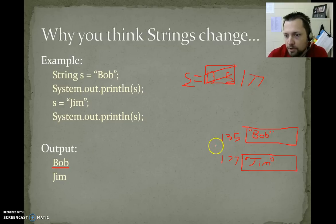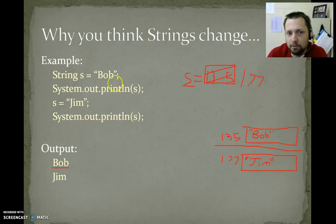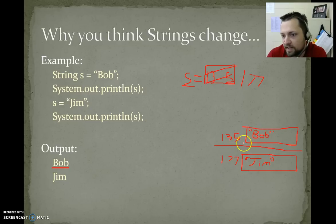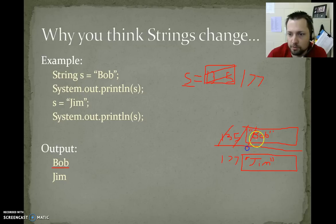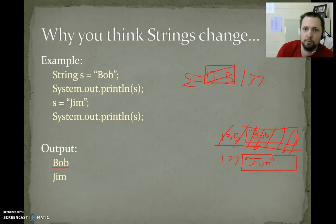So s is Jim, but notice Bob did not get changed. At location 1, 3, 5 we still have Bob. S is a container that references a string — first it referenced the string at location 1, 3, 5 (Bob), now it references 1, 7, 7 (Jim). Bob wasn't changed to Jim. The garbage collector is going to go around and destroy that location because nobody has a reference to it anymore. But we did not actually change Bob. What happened is we created a new string with a different memory address.